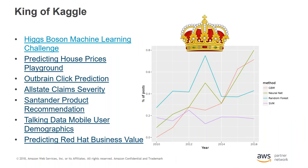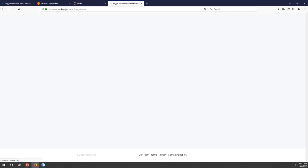By applying gradient boosting to decision tree models in a highly scalable manner, XGBoost does remarkably well in machine learning competitions and in business. It robustly handles a variety of data types, relationships, and distributions, and provides a large number of hyperparameter variables to tune and improve model performance. XGBoost is really the king of Kaggle — that is where its name was made. It won the Higgs-Boson machine learning challenge in 2013.